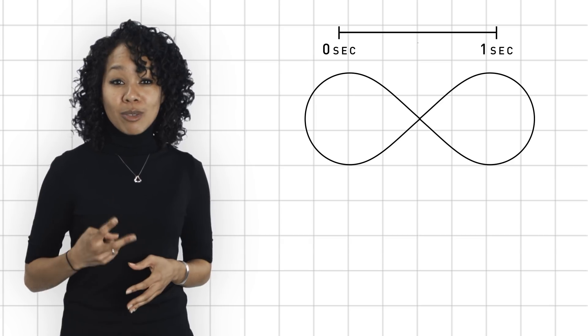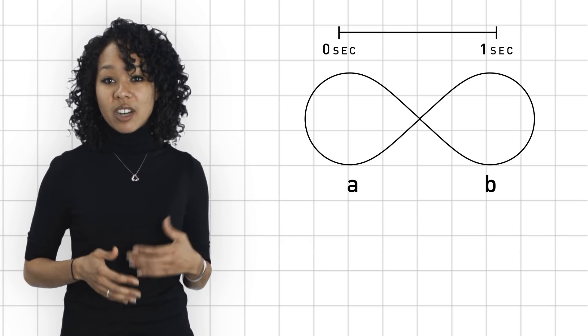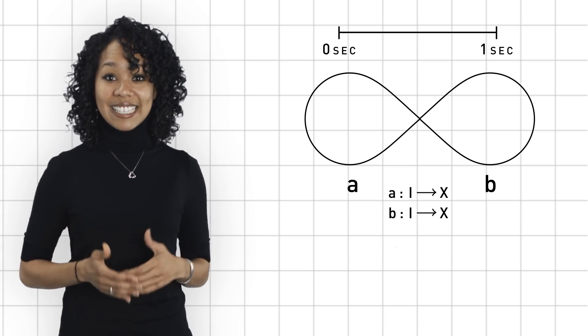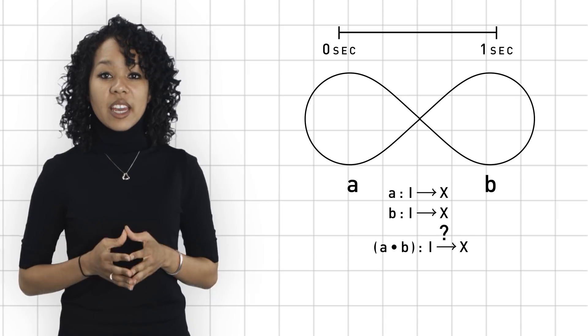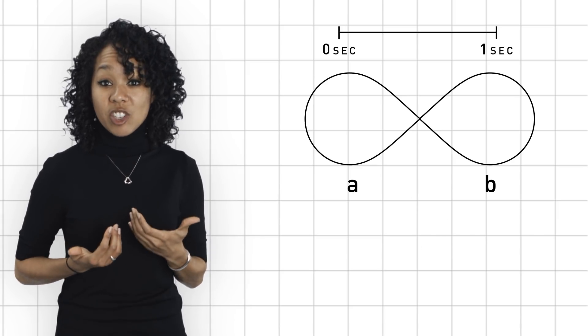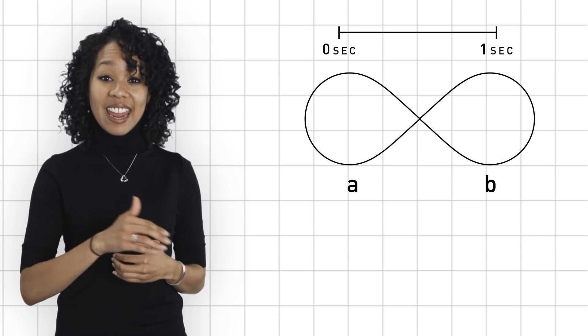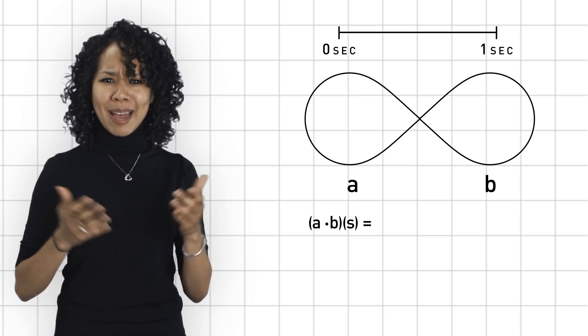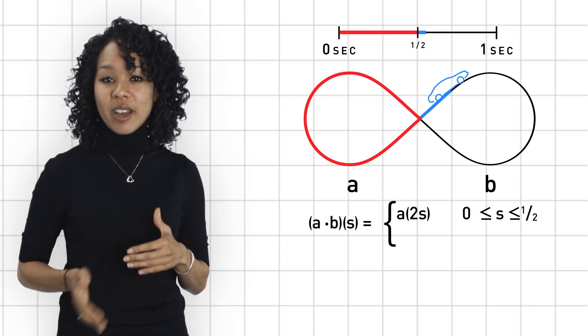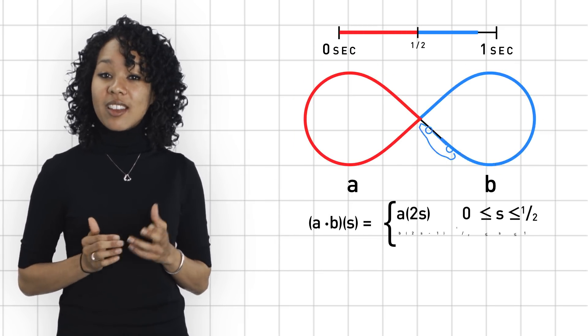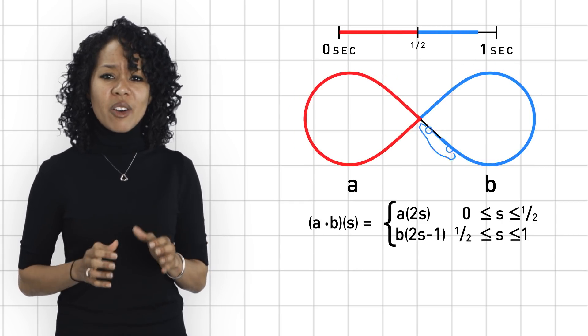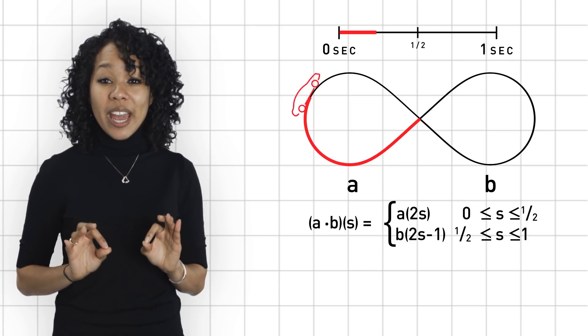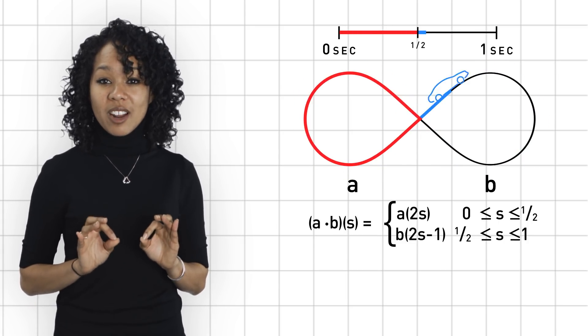Now, suppose we have two loops. Let's call them A and B. And let's say they both start and stop at the same point in space. Is there a way to think of this wedge as a single loop that we can call A times B? In other words, can we come up with instructions that will tell us how to go around both A and B within, and here's the key, a one second time interval? Can we do it? Absolutely. Here it is. Just have the red car go around A in the first half second, then have the blue car go around B in the next half second. Now, to do this, each car must travel at twice their original speed, but that's fine.